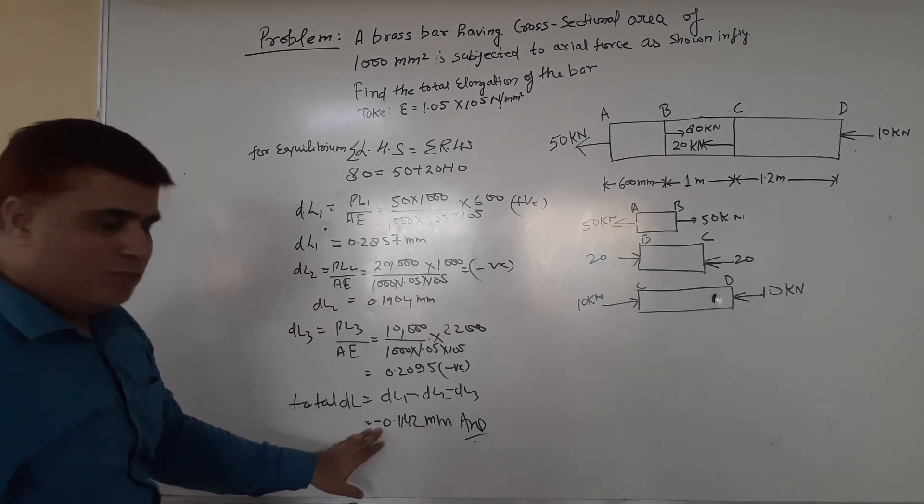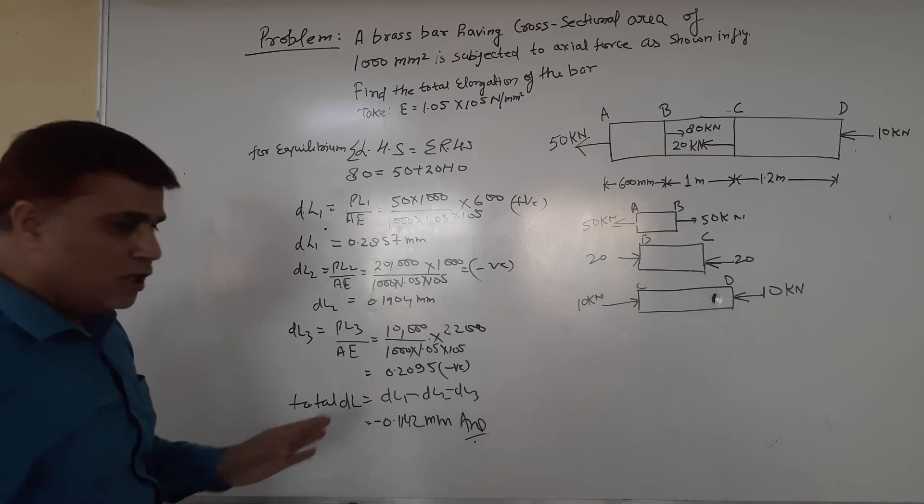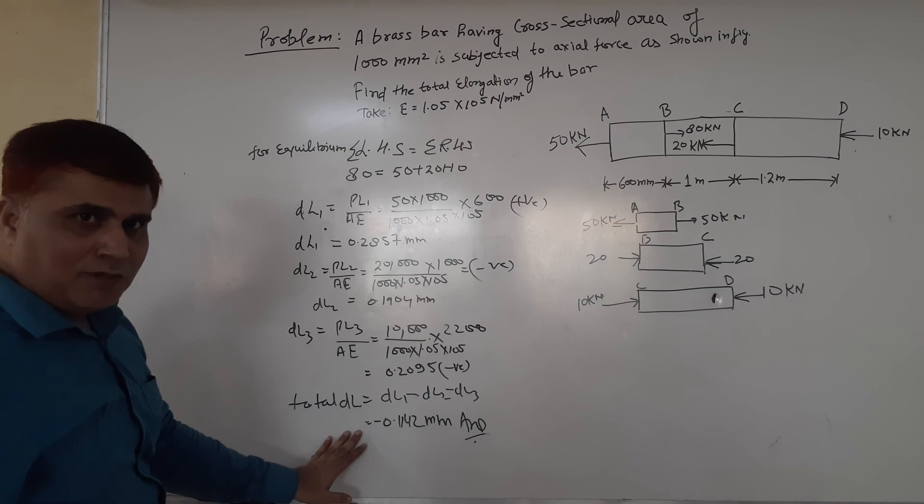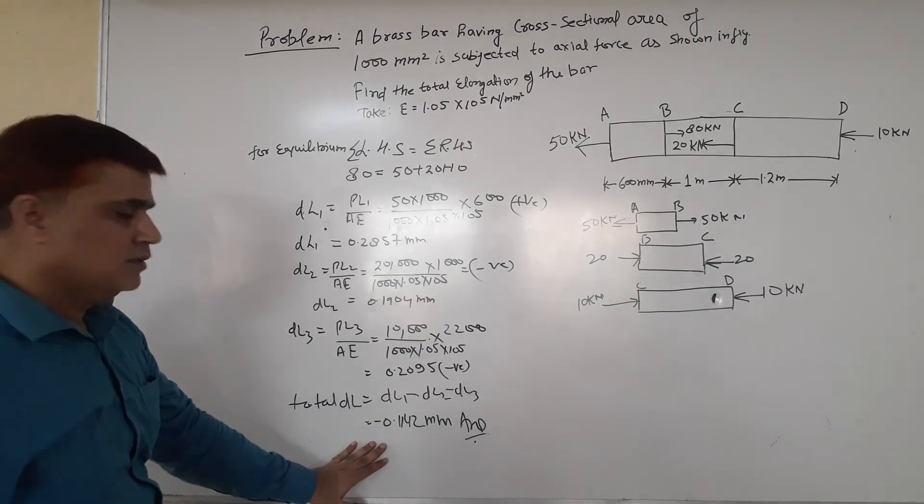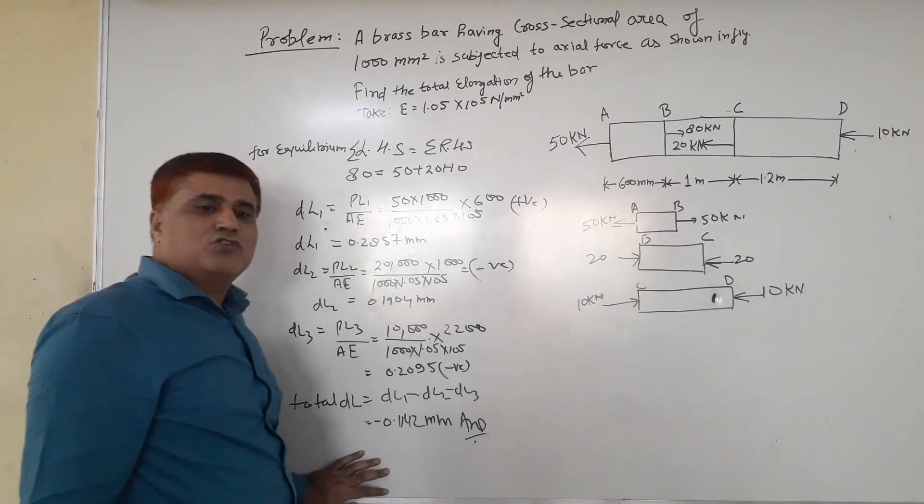Why is it negative? Because the overall elongation is compressive. That's why it comes in the form of negative. Thank you, students.